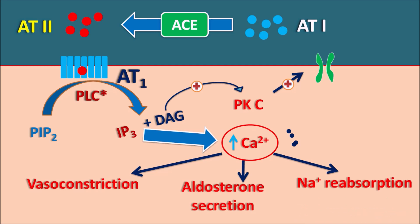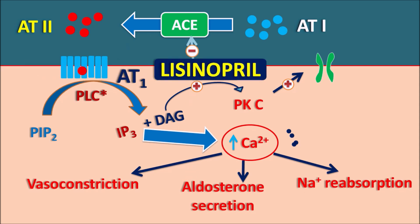Angiotensin 2 is responsible for vasoconstriction as well as increased sodium reabsorption, both of which increase blood pressure and perfusion pressure. This is a normal physiological mechanism. But in pathological conditions like hypertension and congestive heart failure, the renin-angiotensin system is inappropriately activated, resulting in persistent raised blood pressure and increased cardiac work. So Lisinopril inhibits the ACE enzyme, thereby inhibiting the conversion of angiotensin 1 to angiotensin 2, inhibiting all actions mediated through angiotensin 2 and reducing blood pressure, aldosterone secretion, and sodium reabsorption.